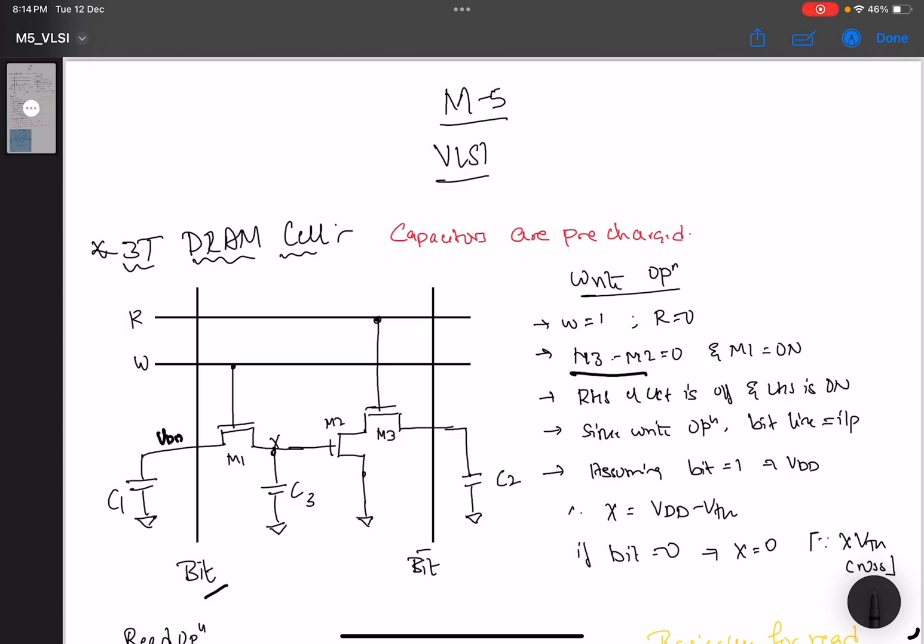X now will be VDD minus VTN because M1 will have its own threshold voltage. So X value, we are now writing value to X inside the memory. So it is VDD minus VTN.